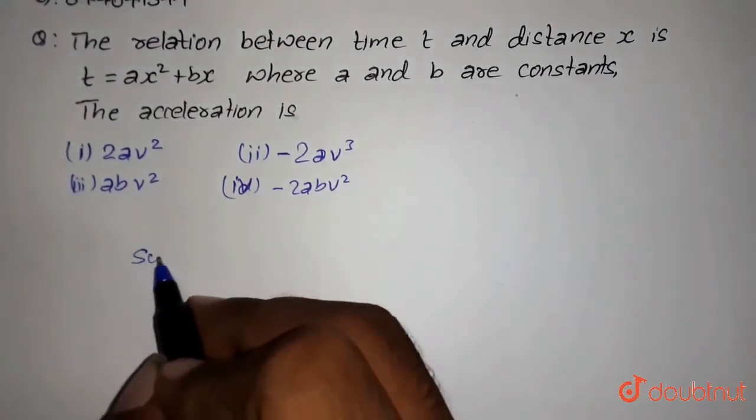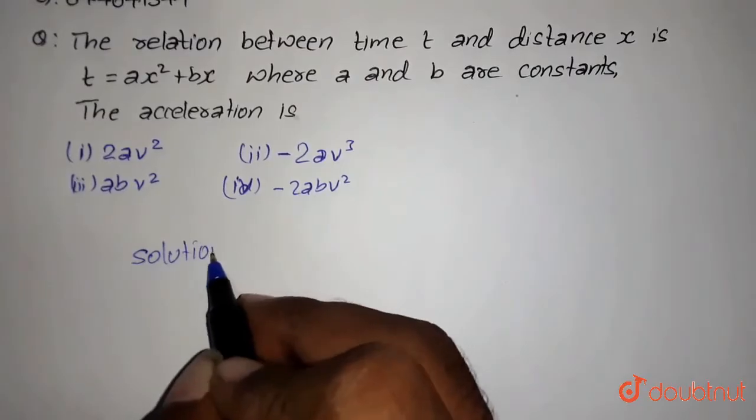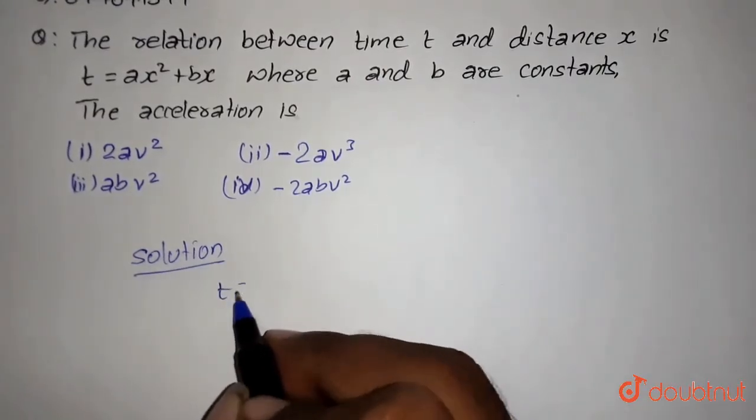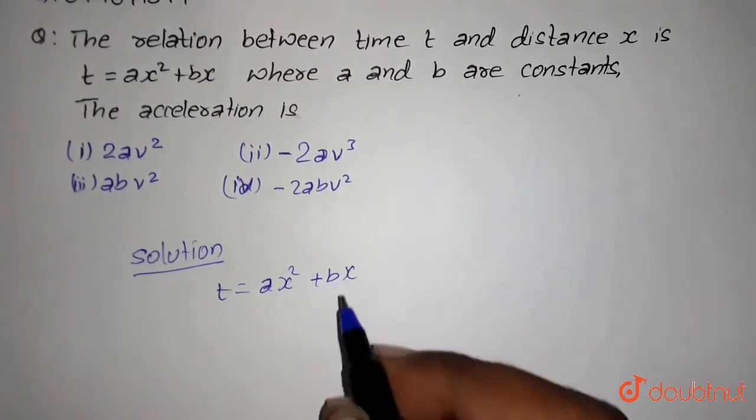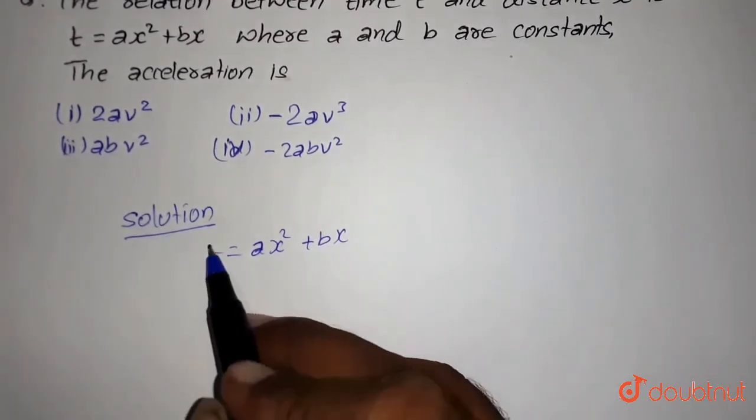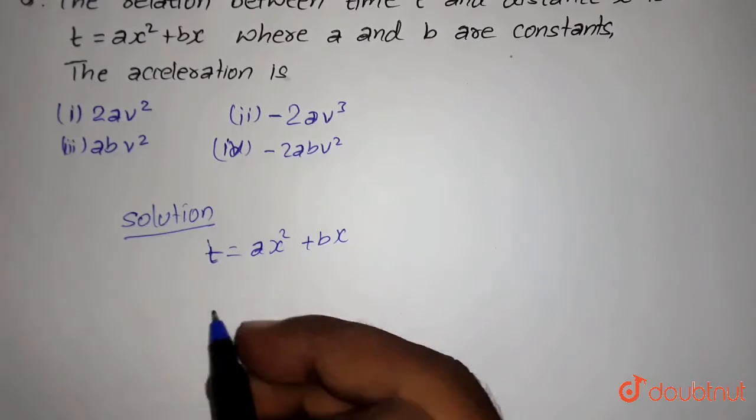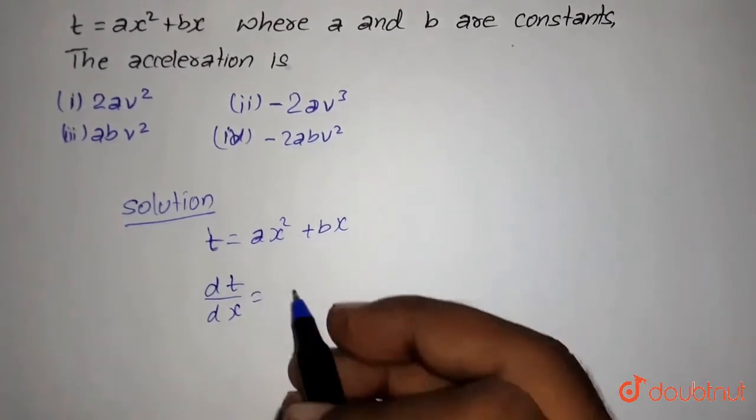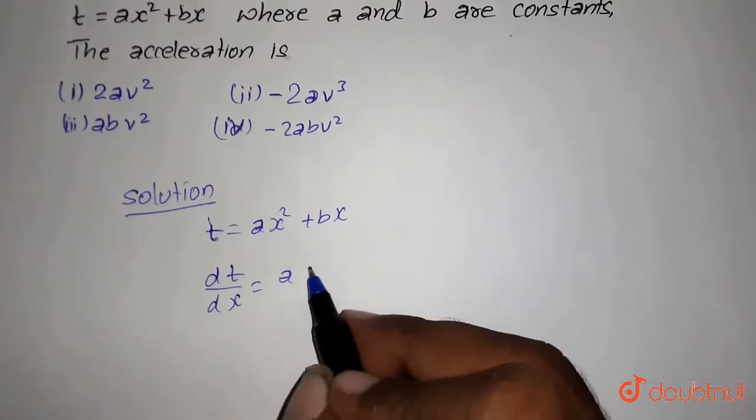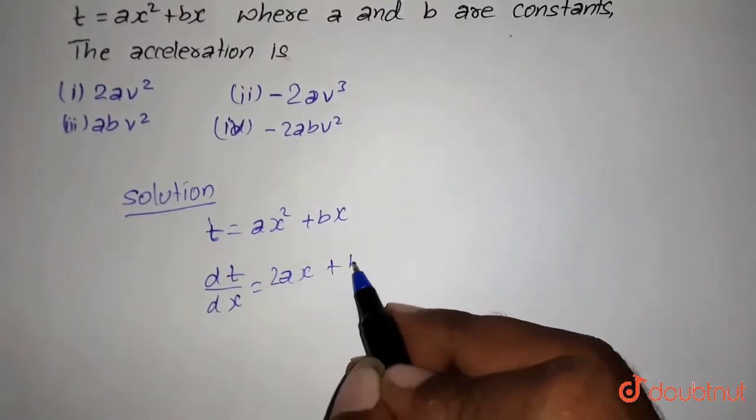So the solution will be: It is given t equals ax square plus bx. So first we will differentiate this equation with respect to dx. So it will be dt by dx equals 2ax plus b.